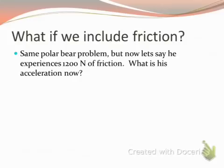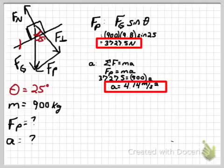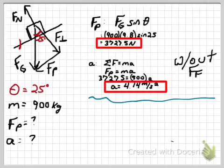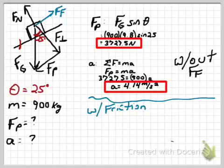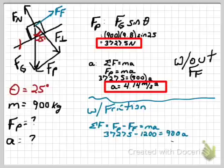How does this problem change if we include friction? Let's take the same polar bear problem, but now let's say he experiences 1,200 Newtons of friction. What is his acceleration now? Notice how my free body diagram is going to change — I now have friction acting against the direction of our motion. When I sum the forces this time, I'm going to have that parallel force acting down the incline, friction going against the incline, and we set that equal to mass times acceleration.